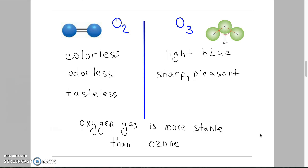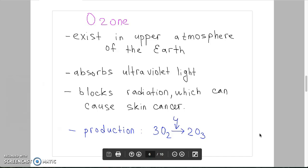You need to know that oxygen gas is more stable than ozone. Okay guys, let's talk about ozone. Ozone exists naturally in the upper atmosphere of the earth. The ozone layer is especially important because it absorbs ultraviolet light. Ozone acts as a screen to block radiation which can cause skin cancer.